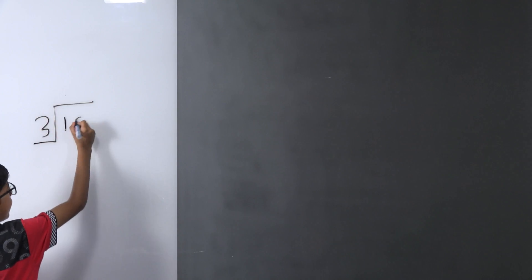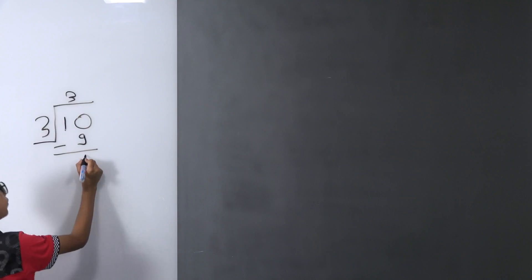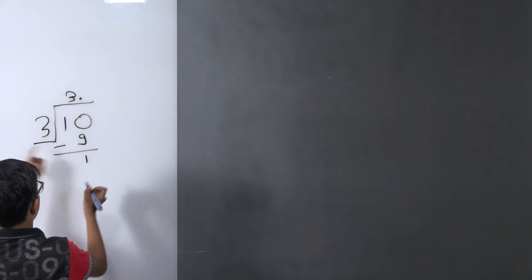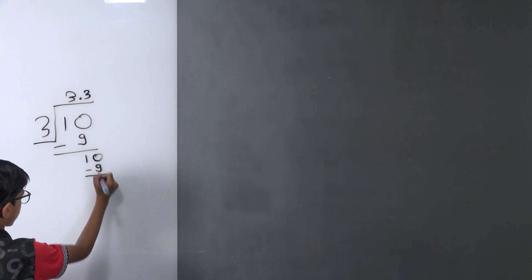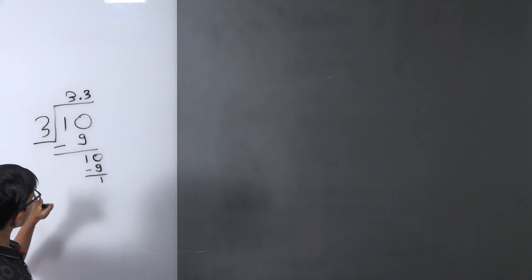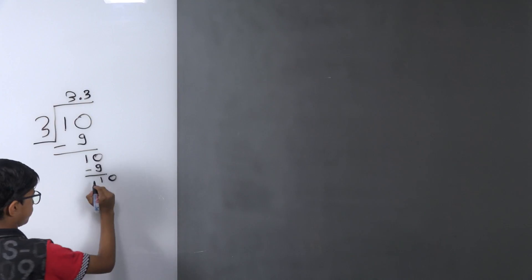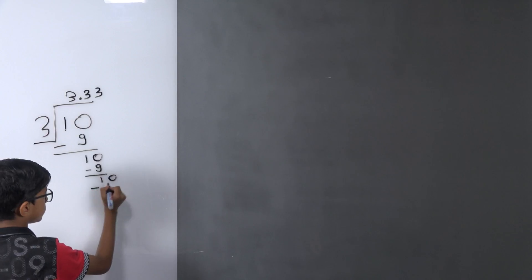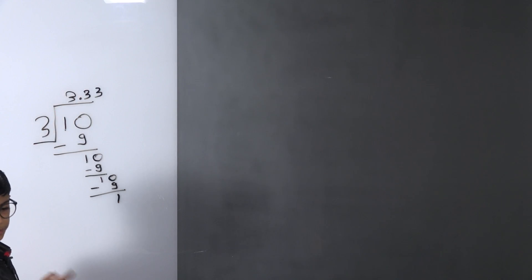Now we will learn repeating decimals of a single digit. For example, 10 divided by 3. Three threes are nine, we subtract and get 1. We put a decimal point and write a zero. Three threes are nine, we subtract again and get 1. We don't need to write the dot again. Three threes are nine, subtract and get 1. This is called repeating because the digit keeps repeating.